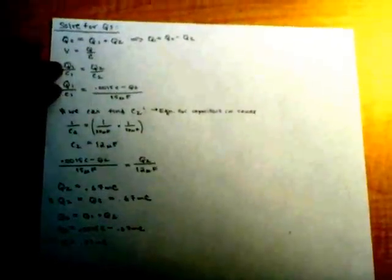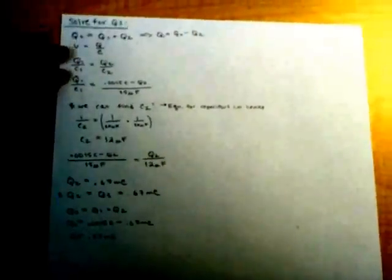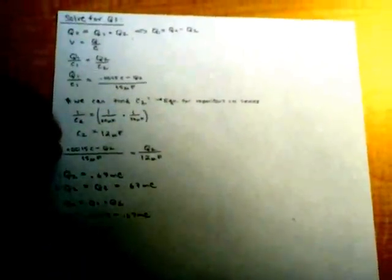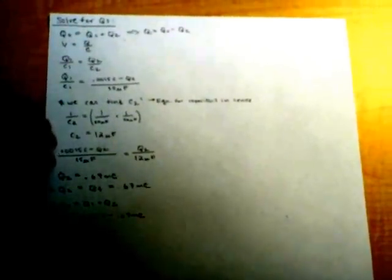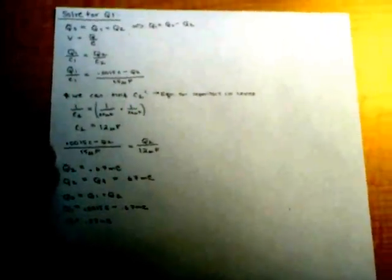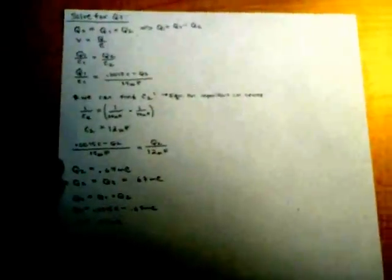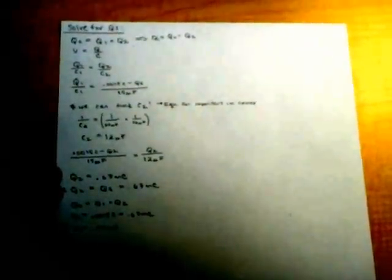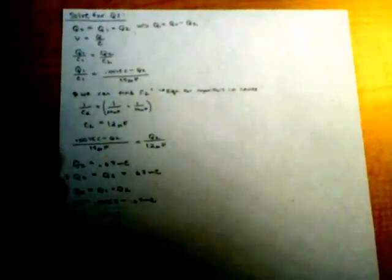Setting these two equations equal to each other, because they both equal Q1 over C1, we solve for Q2 and find that Q2 equals 0.67 millicoulombs. And because Q2 and Q3 are the same, they both equal 0.67 millicoulombs.